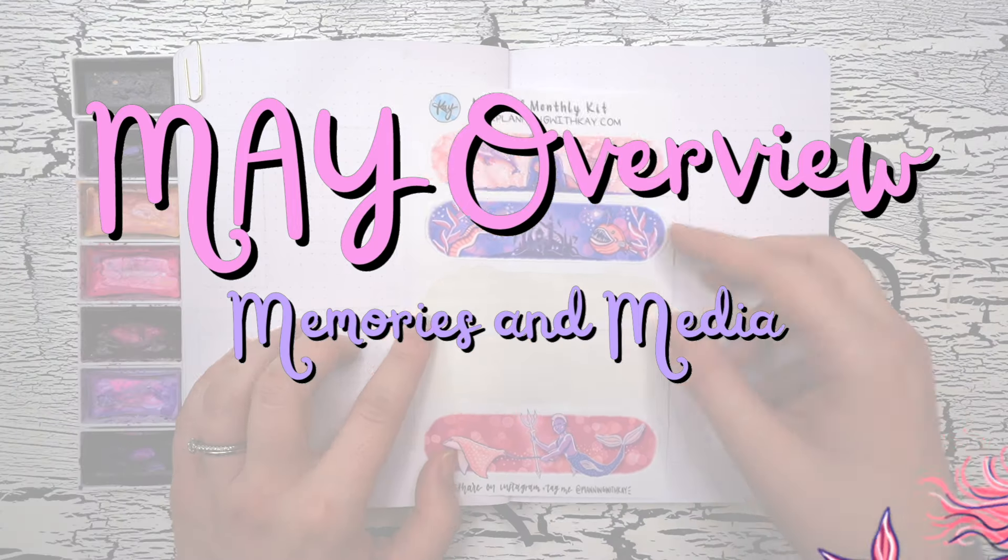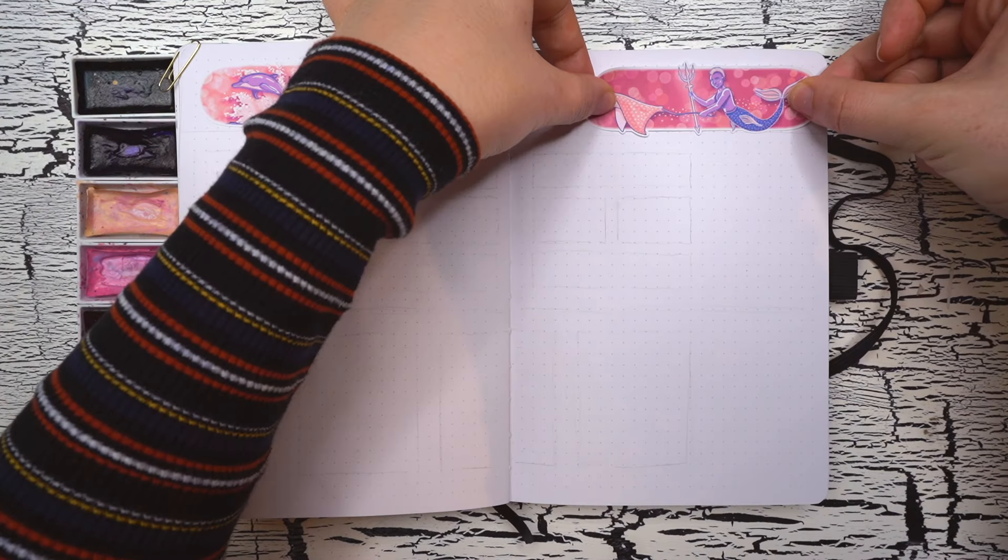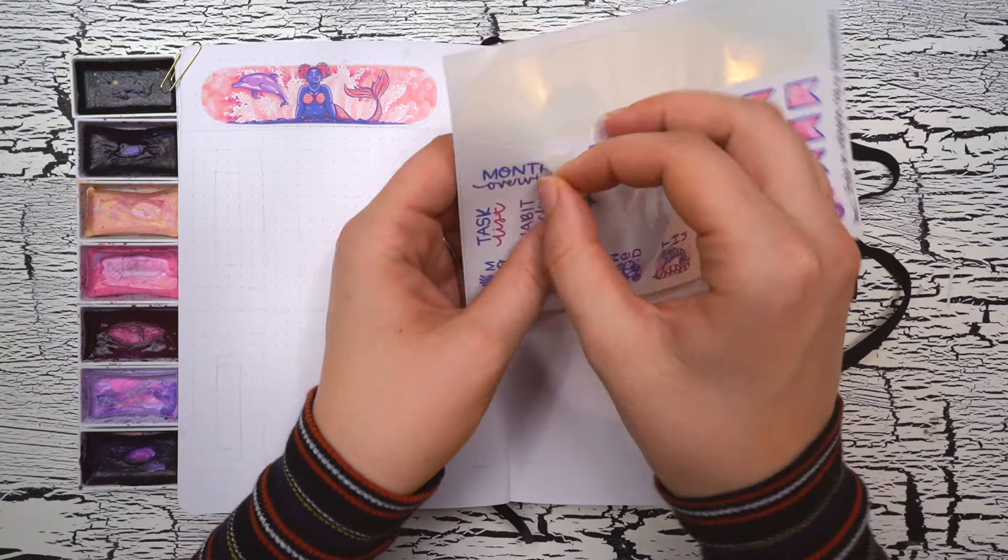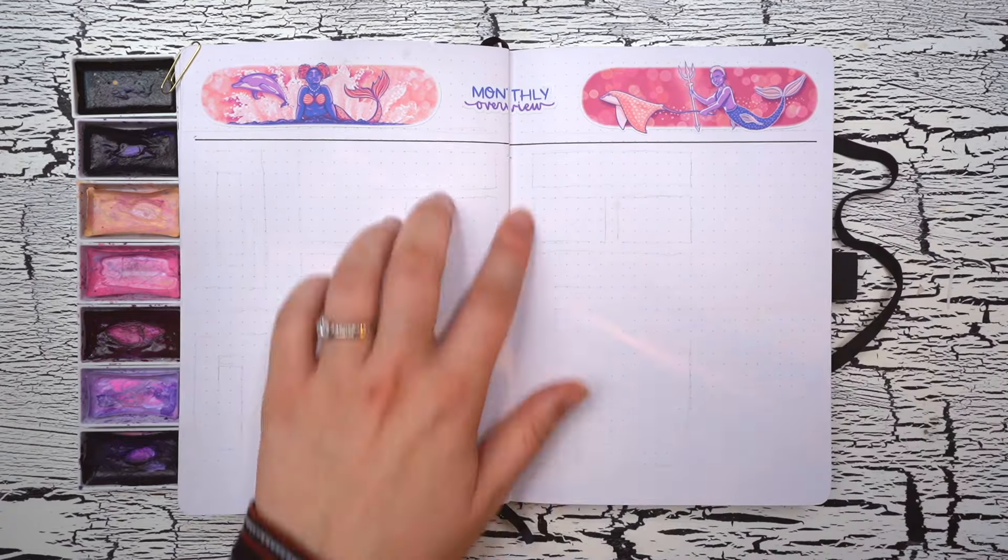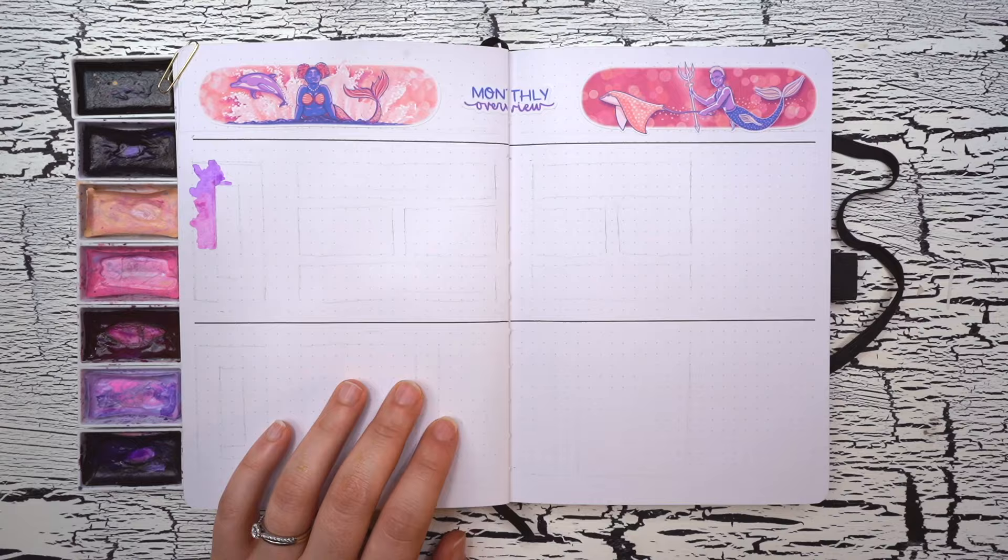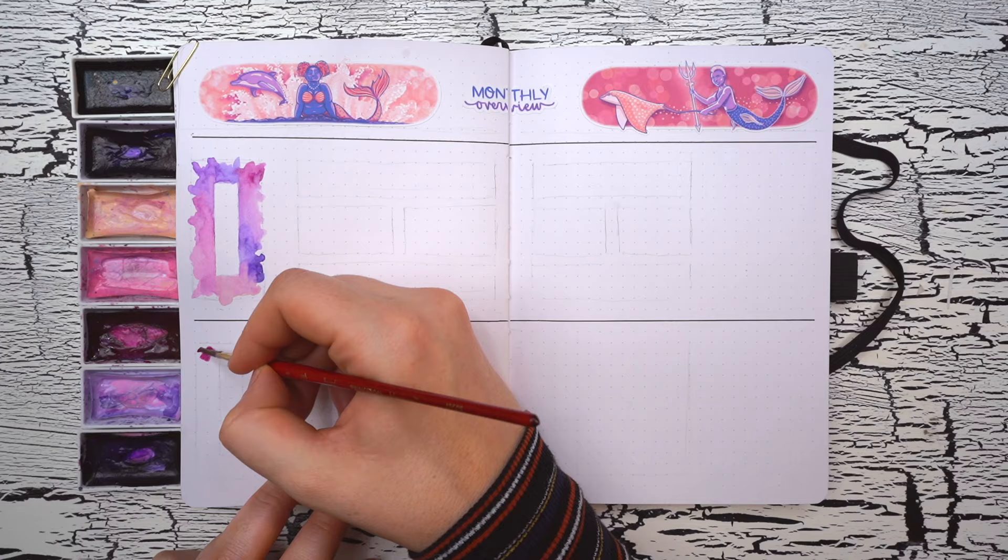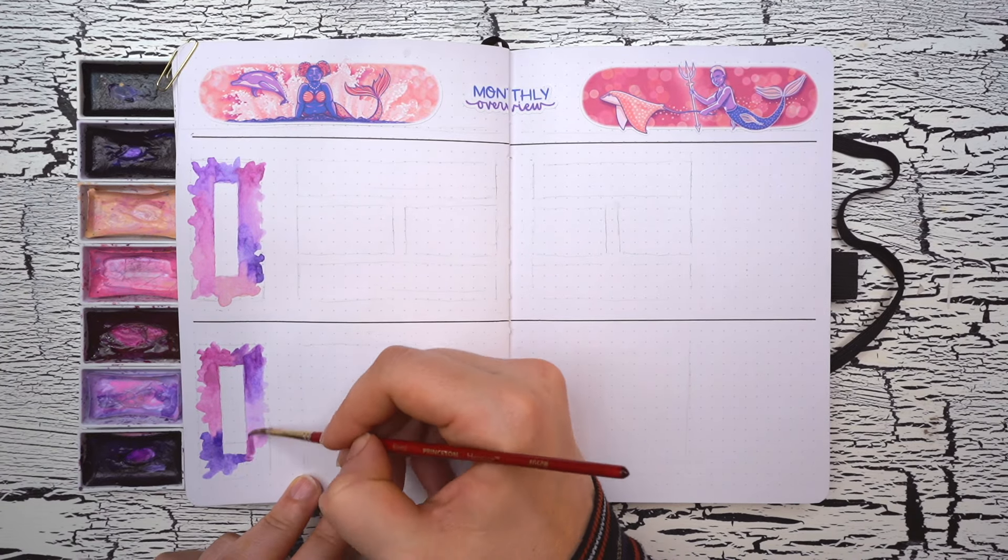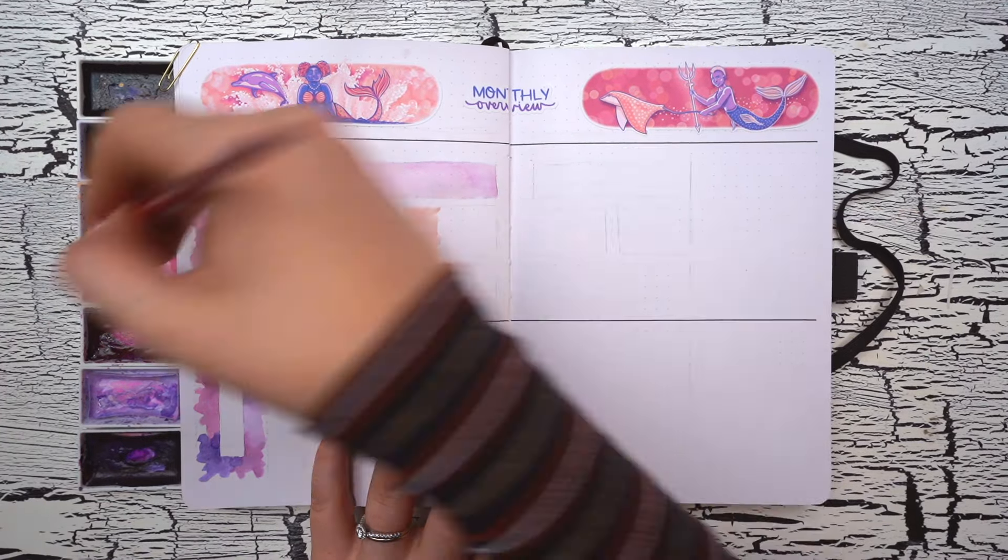With that, all of my May trackers are set up, and it's time to move on to the next spread, which I'm calling my monthly overview spread. This spread is going to have two separate sections, one for keeping track of monthly memories, and another for my monthly media, things like books, movies, shows, and podcasts that I read, watch, and listen to during the month of May. So I created a big header along the whole top of the page using two big mermaid scenes and a little monthly overview sticker from the monthly kit.